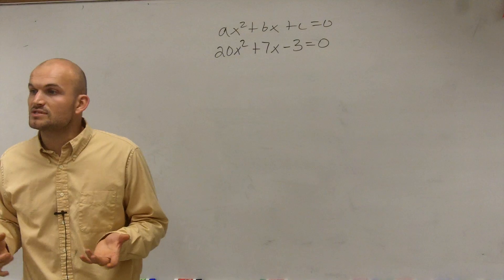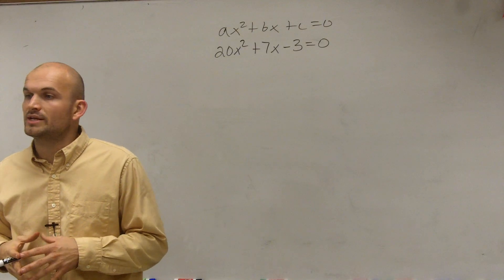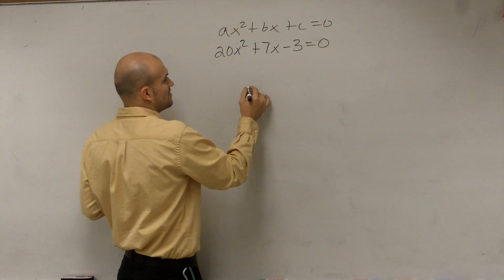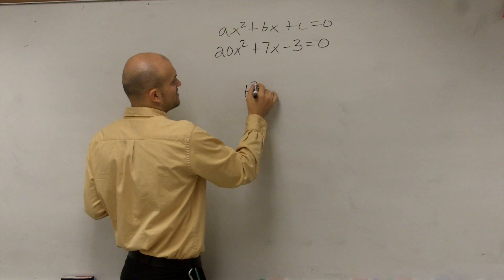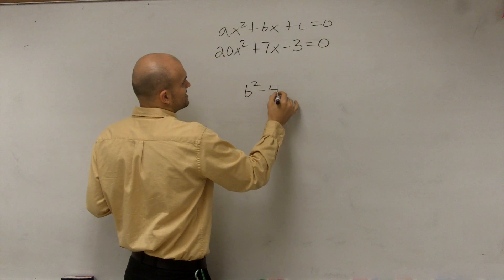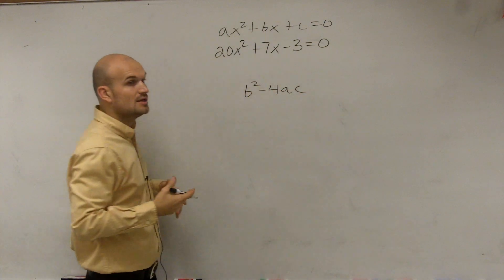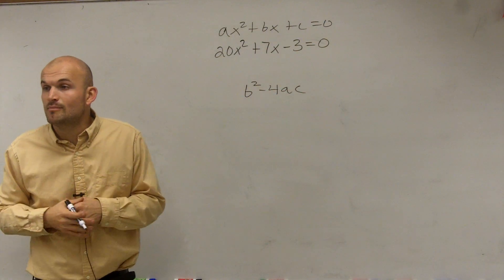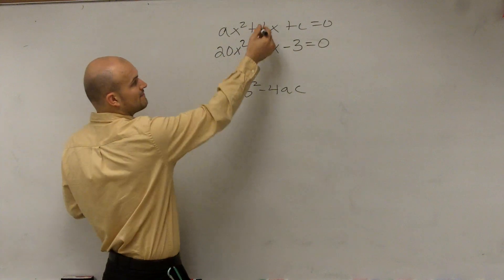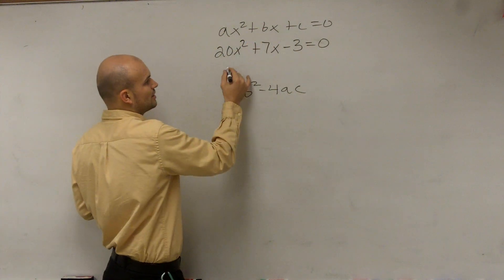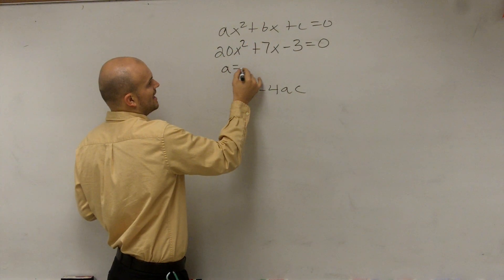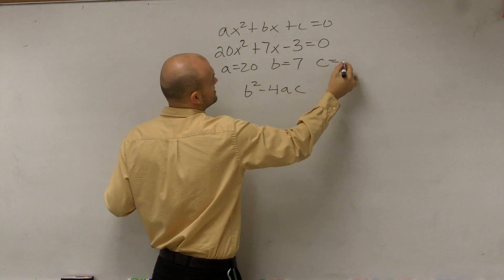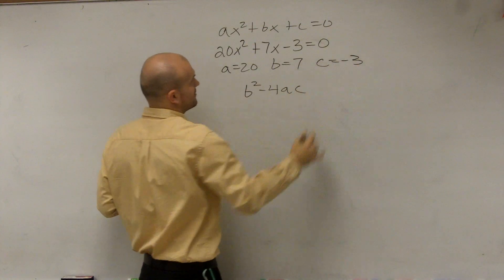So once I have it in that form, the first thing we want to do is find the discriminant. Remember the discriminant is written as b squared minus 4 times a times c. So to do that I need to know what my a, b, and c are. By following my quadratic equation: a equals 20, b equals 7, and c equals negative 3.